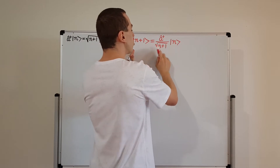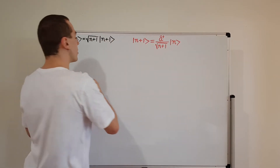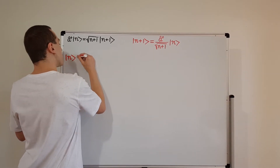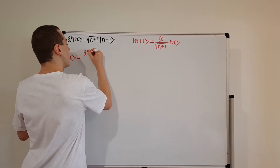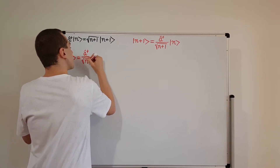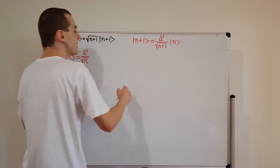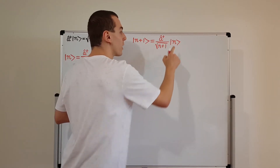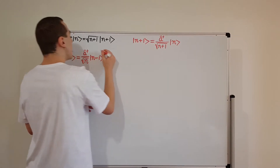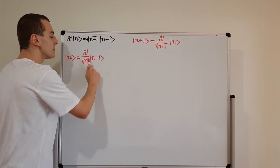This works for any allowed value of n, so we can relabel. If we call n plus 1 the new version of n, then on the left-hand side I write the ket labeled by n, and on the right-hand side we still have a dagger but now we divide by the square root of n — because the number inside this ket must match the number in the square root. And the ket being acted on becomes n minus 1. So I've written the eigenstate labeled by n in terms of n minus 1.